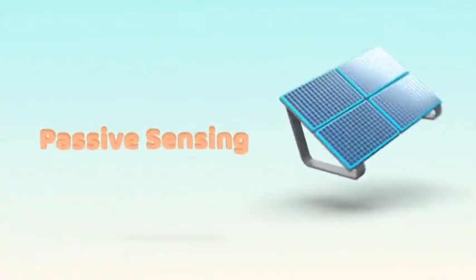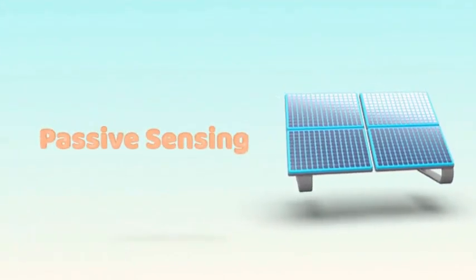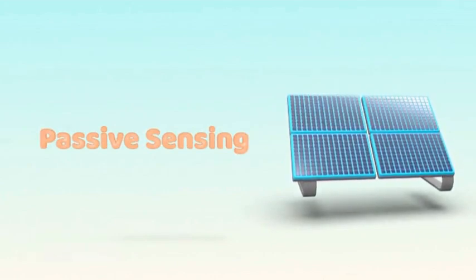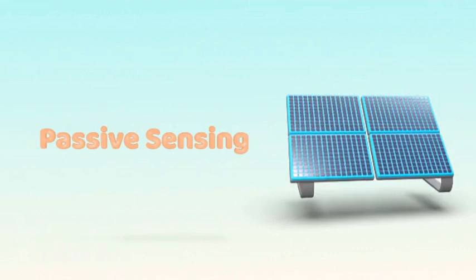Passive sensing relies on detecting natural energy emitted, reflected, or transmitted by objects in the environment. These sensors do not emit energy of their own.